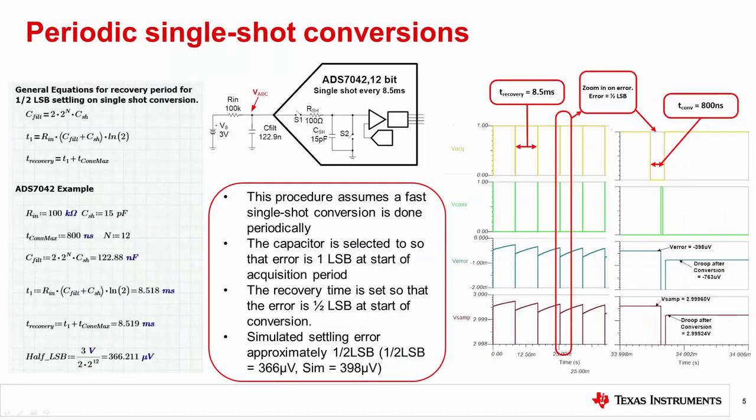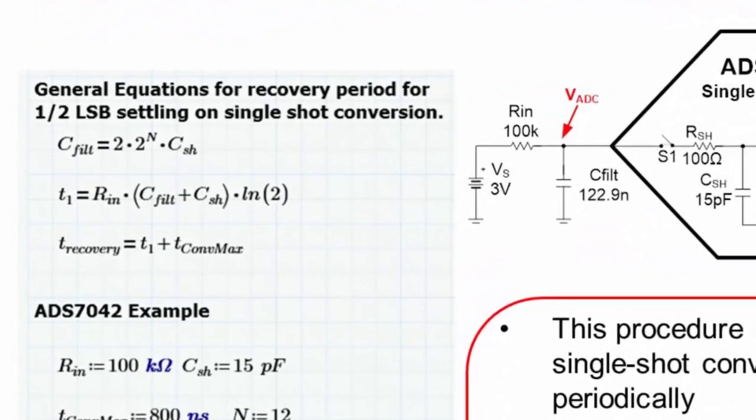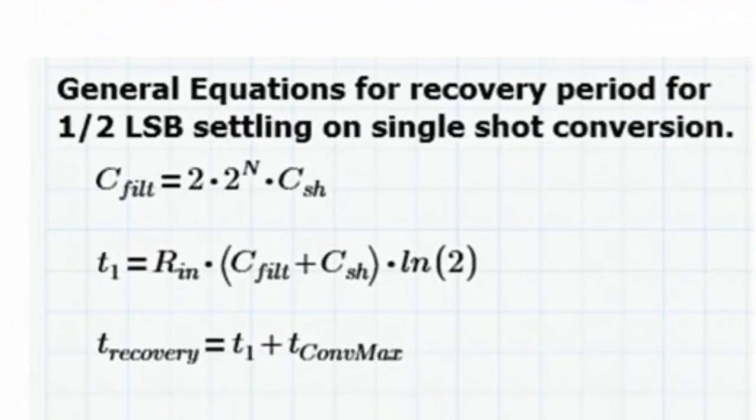Some system monitoring solutions only need to periodically monitor the supplies. So, for example, a converter may take a single conversion at one mega sample per second once every 100 milliseconds. For this kind of solution, a very large filter capacitor is often used on the ADC input. The capacitor is significantly larger than the sample and hold capacitor, so at the start of the conversion cycle the droop introduced is minimal. The design equation shown here select a filter capacitor that will introduce 1.5 LSB of droop error at the start of the conversion cycle. The next equation calculates a recovery time that you will have to wait between single shot conversions.